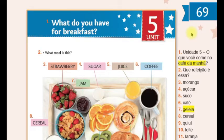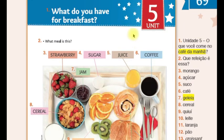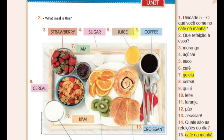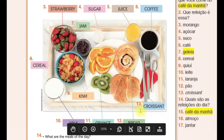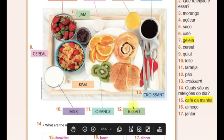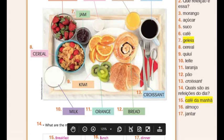Na aula de hoje, vocês vão realizar a página 69. E aí, primeiro nós vamos repetir o nome de alguns alimentos que nós aprendemos na aula de hoje. Então, vamos lá. Strawberry, o morango. Jam, geleia. Sugar, o açúcar. Juice, o suco. Coffee, o café. Croissant. Bread, o pão. Orange, a laranja. Kiwi, que é o kiwi mesmo. Milk, o leite. E cereal, que é o cereal.